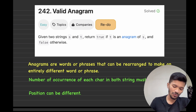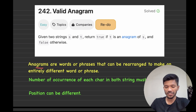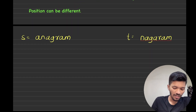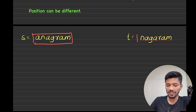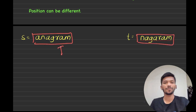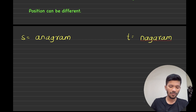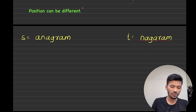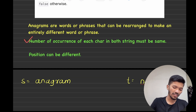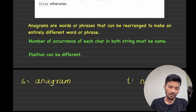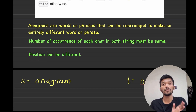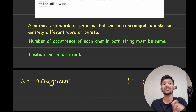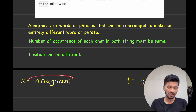The question is: what do you mean by anagram? An anagram is a word or phrase that can be rearranged to make completely different words. For example, if I have a string s called 'anagram', I made the string t using the characters present in s. The total number of occurrences of each character must be the same in both strings. Only the position of the characters can be different. You're not allowed to use different or extra characters — you have to use the characters present in string s.